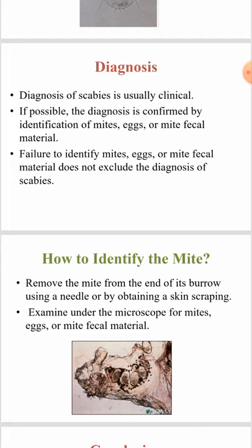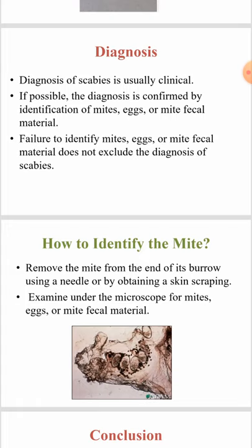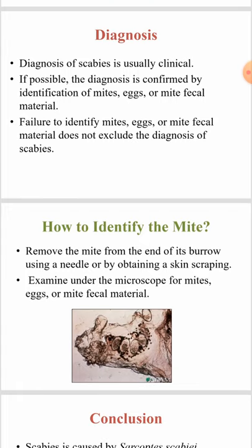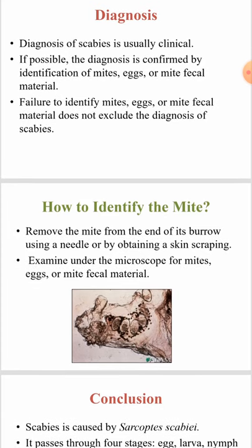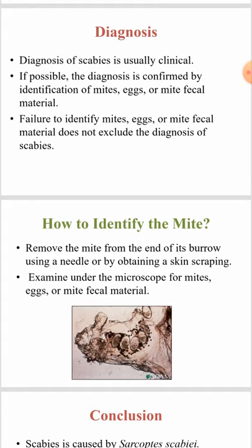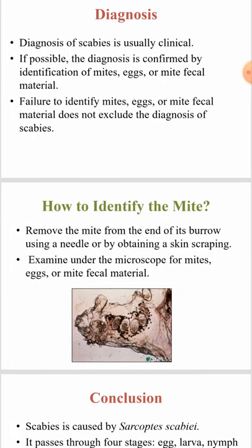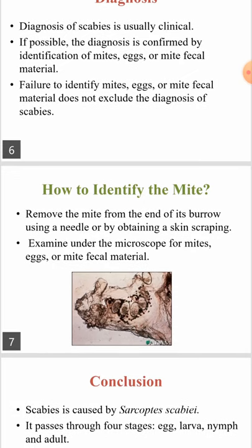We can confirm the diagnosis using a microscope, where we look for the adult, the egg, or the fecal material. If we use a microscope and we don't see the parasite, it doesn't mean that the patient does not have scabies. As stated, the failure to identify mites, eggs, or mite fecal material does not exclude the diagnosis of scabies. But if we see any one of these — mite, egg, or mite fecal material — this confirms the diagnosis.